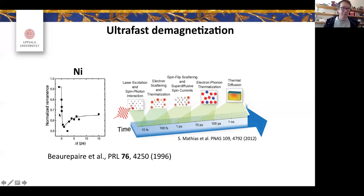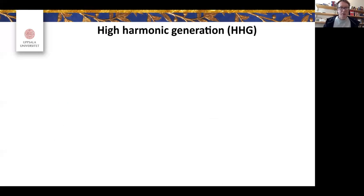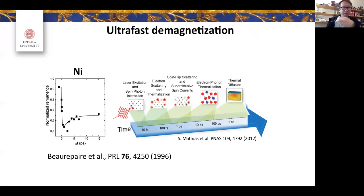So you will have a fast demagnetization, and then in a nanosecond timeframe you completely go back to the original magnetic state. This measurement done in 1996 was a pump-probe experiment, using both pumping and probing with optical light.